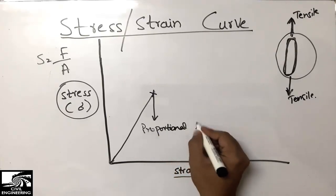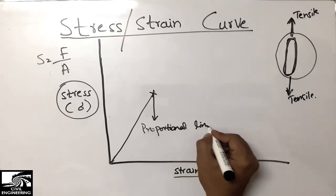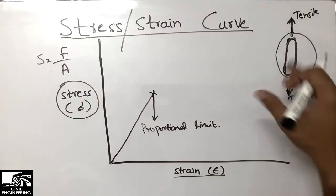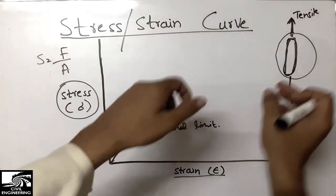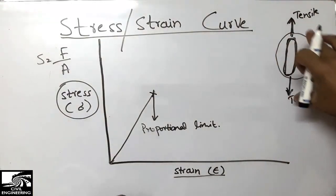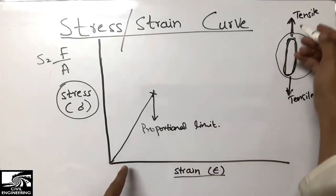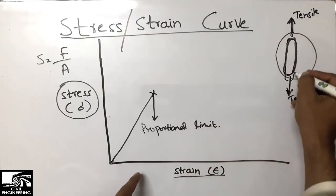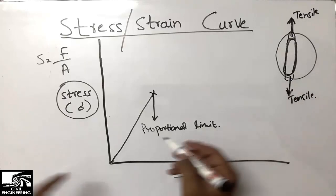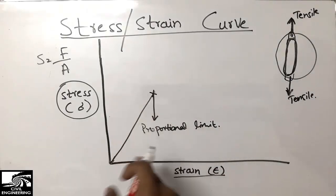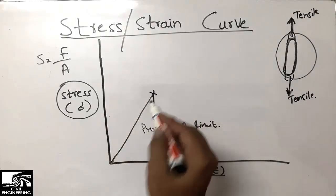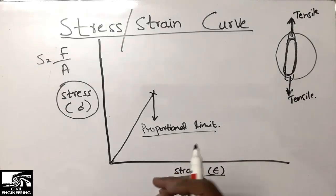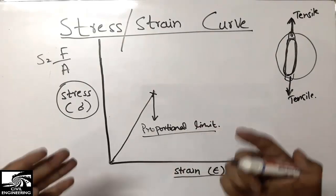This point is called the proportional limit of the steel bar. When the steel is acted upon in tension — with force acting in both directions and the bar being stretched — the stress is directly proportional to the strain. The change in length increases proportionally, up to this point we call the proportional limit.